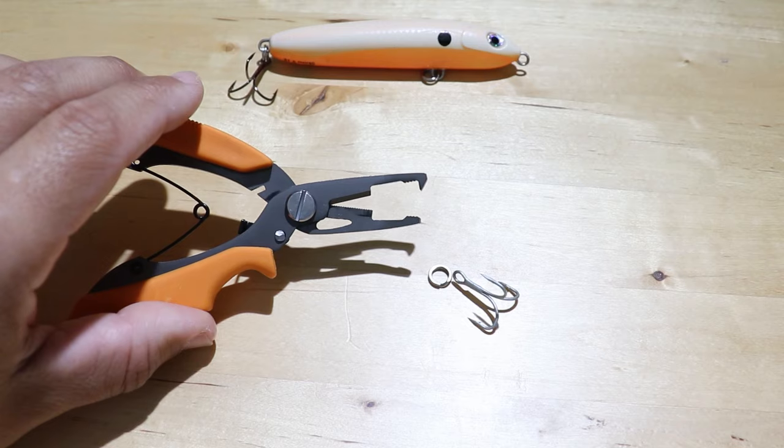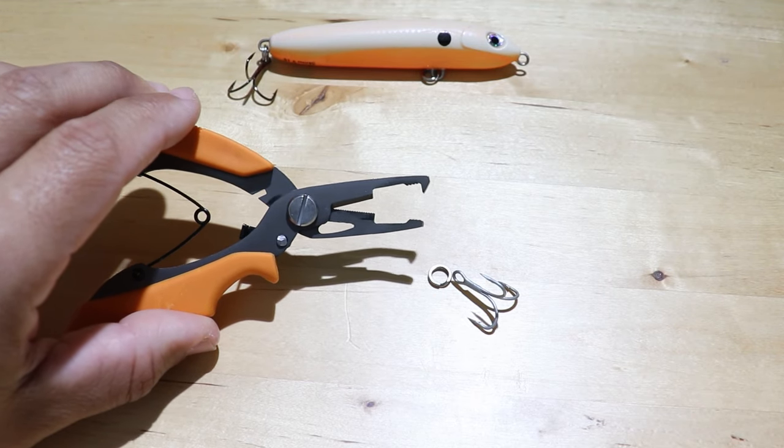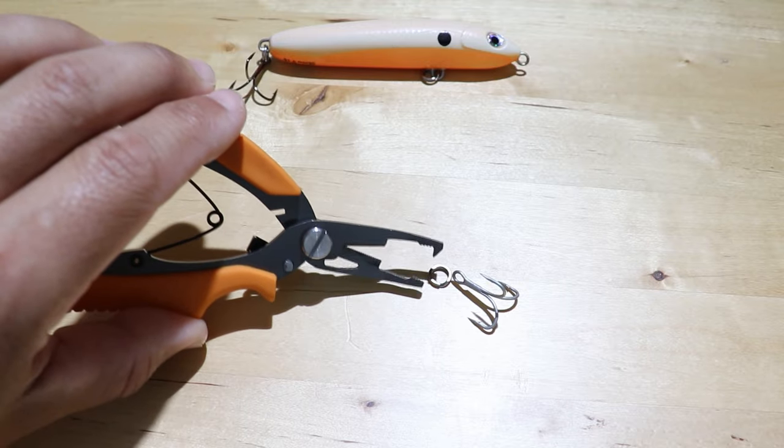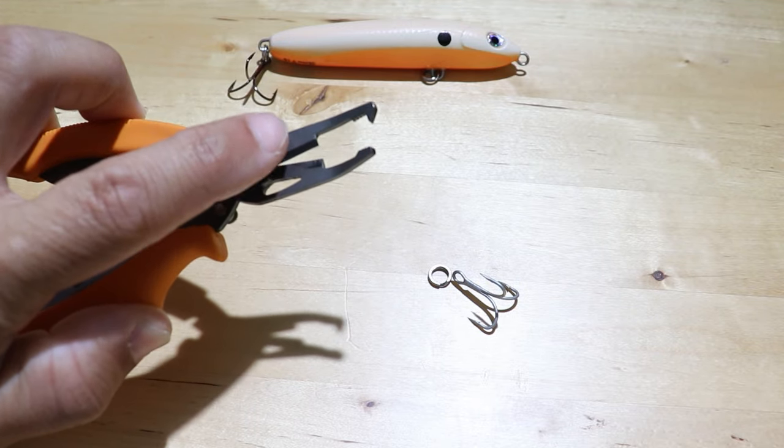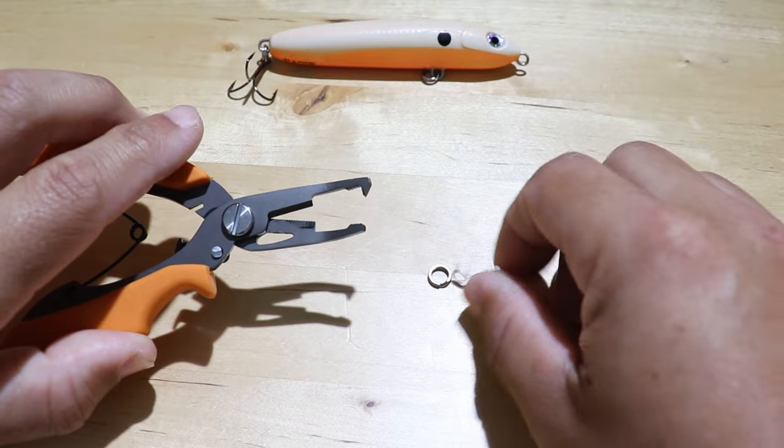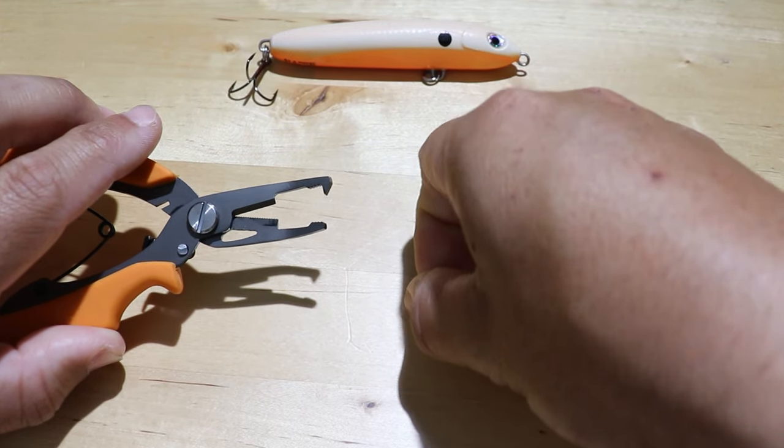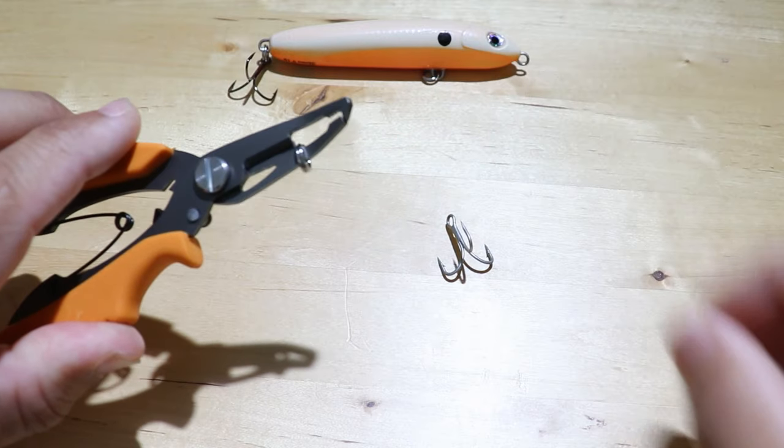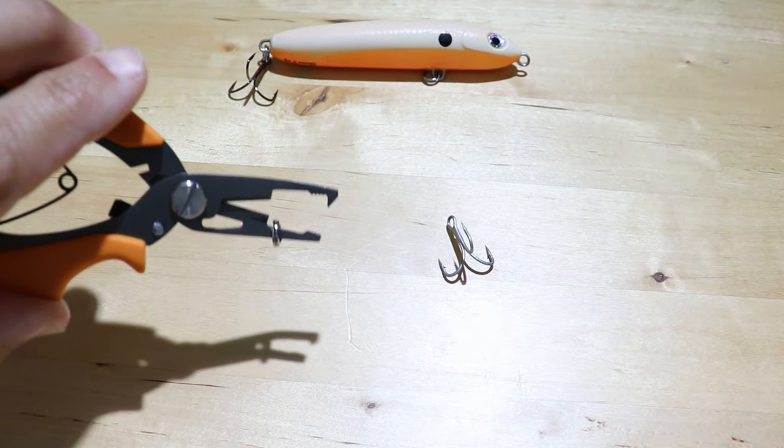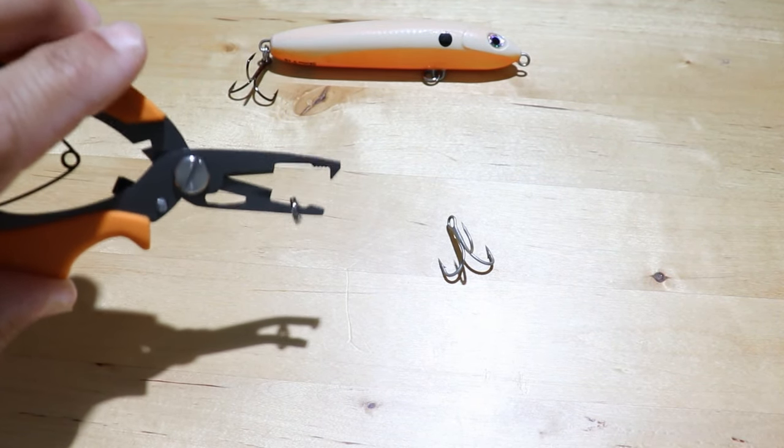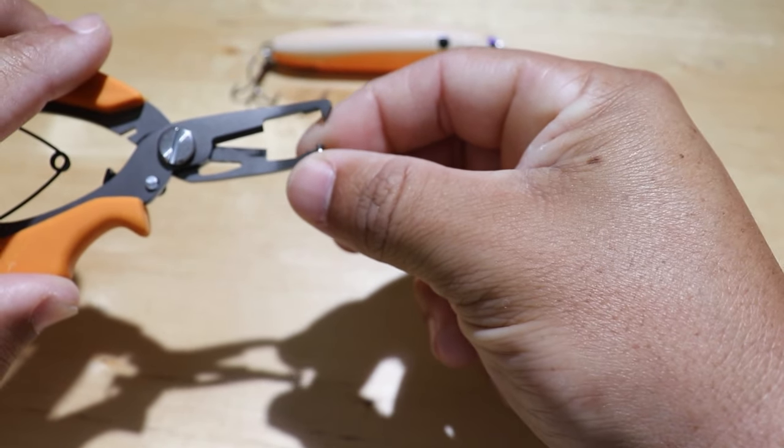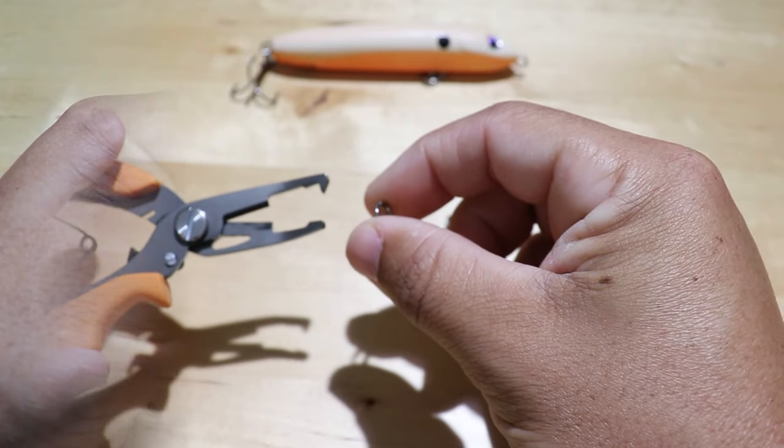So if you use a big pair of bulky pliers it's going to make it really difficult or even impossible to swap out those split rings or treble hooks just because the mouth is going to be too big. You're not going to be able to get inside of the split ring. If you can't get one of the jaws into the split ring you're going to have a really tough time swapping them out.